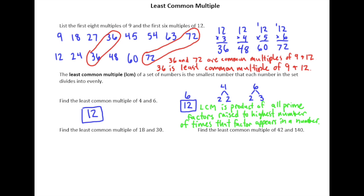So for 4 and 6, I'm going to look at the two prime factorizations: 4 is 2 × 2, and 6 is 2 × 3. I need a 2 and a 3. The factor 2 appears twice in 4 and once in 6, so I need 2 squared. The factor 3 appears 0 times in 4 and once in 6, so I only need one 3. Then I multiply: 2 squared is 4, times 3 is 12.